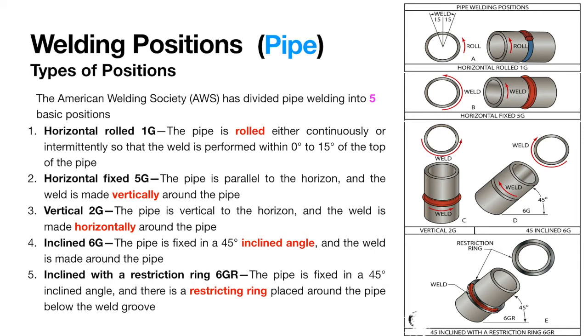6GR is an addition to 6G wherein we put a restriction ring. R corresponds to a restriction ring or a restriction which is added to the pipe weld. 6GR is the same test with a restriction plate on one side of the weld around the circumference of the pipe. This is to restrict the angle of your electrode or filler material in the weld groove.